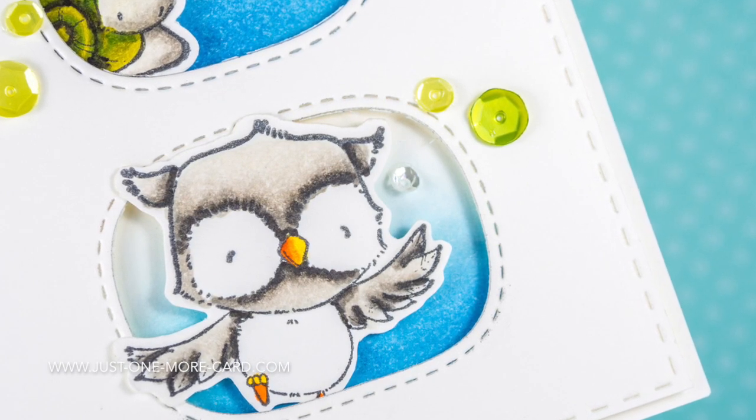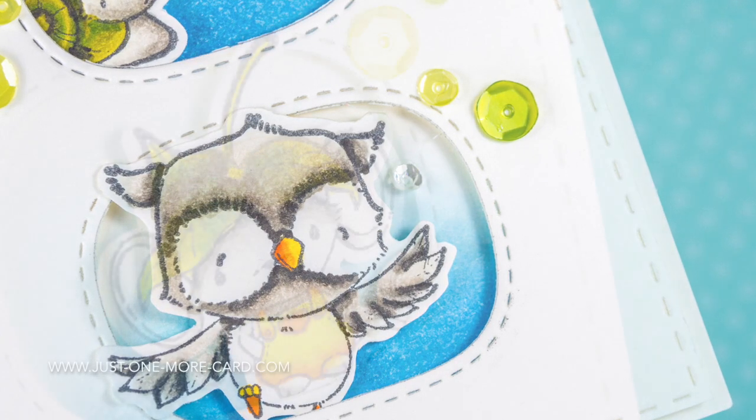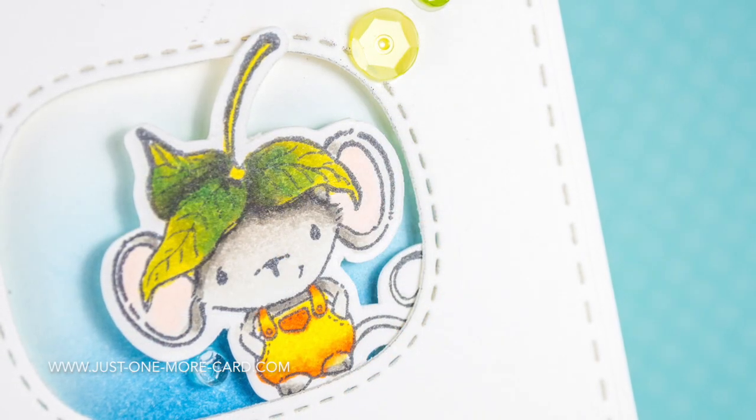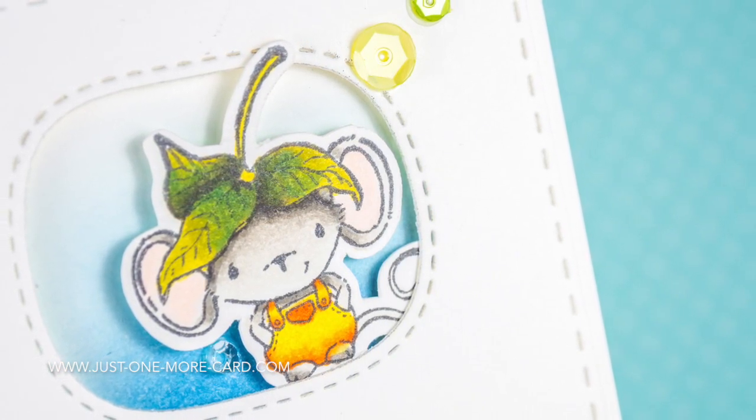Here's a close-up of the owl that I've colored. You can see the nice detail around the eyes and how the wings really look dimensional. Here's our little mouse and you can see the shadow that his little head, the leaves, are casting onto his head.